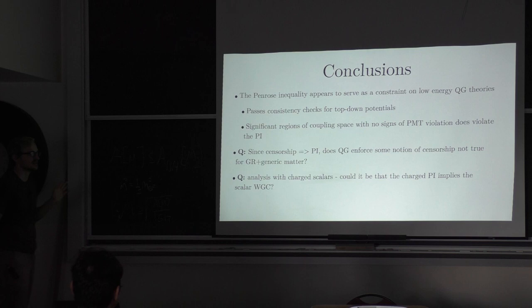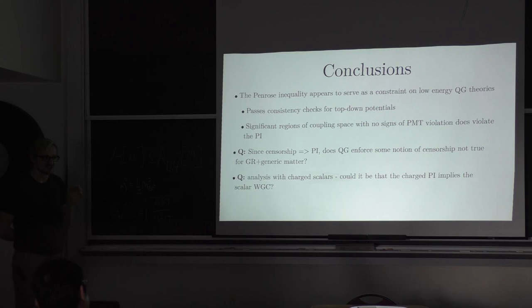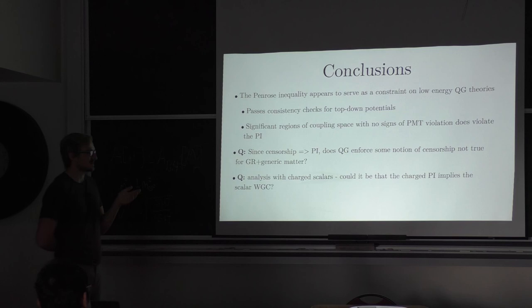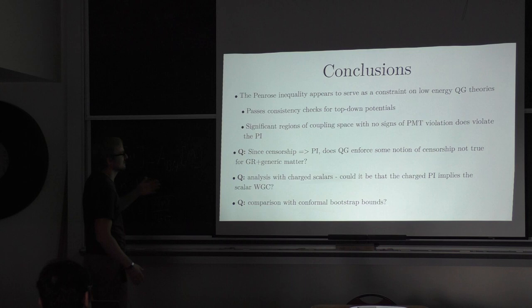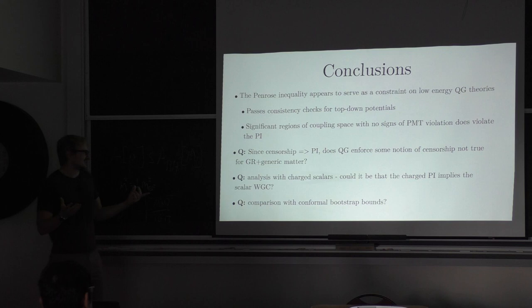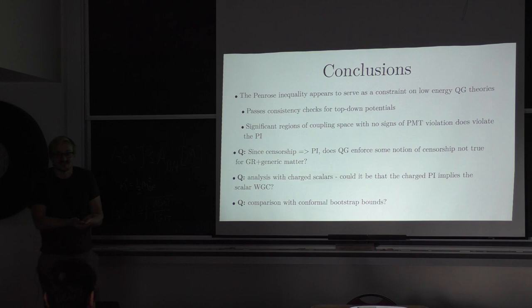The proofs of the charged version in the mathematics literature assume quite unphysical things — for instance, that the charge density of charged matter cannot change sign outside the black hole horizon, which of course it can. So the charged case is quite interesting. Additionally, these bounds can be used to bound correlators on the boundary — it would be interesting to compare with conformal bootstrap bounds to see whether they exclude similar or complementary regions. I have new results I hope to publish next week and would be happy to discuss them.